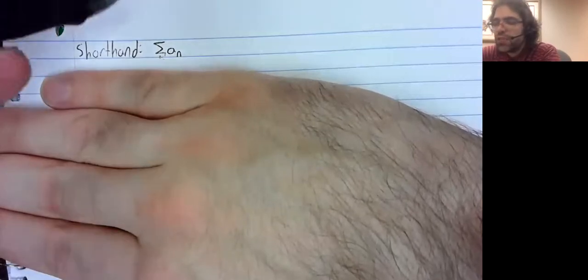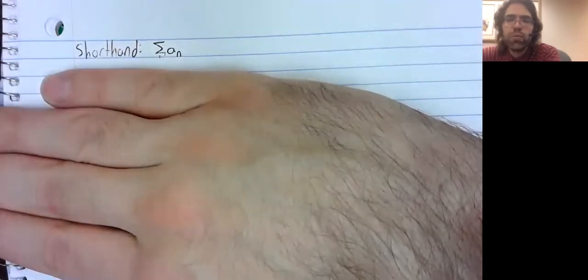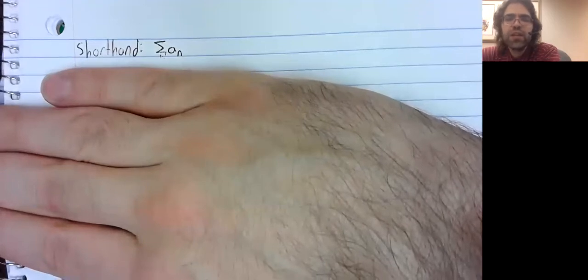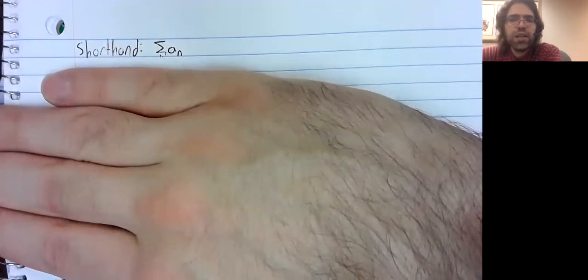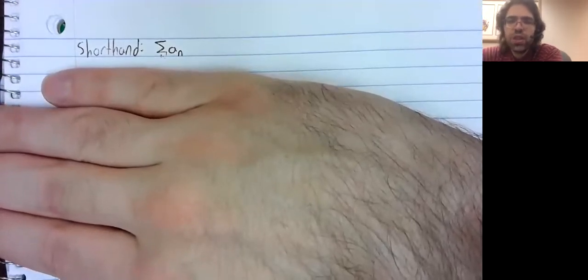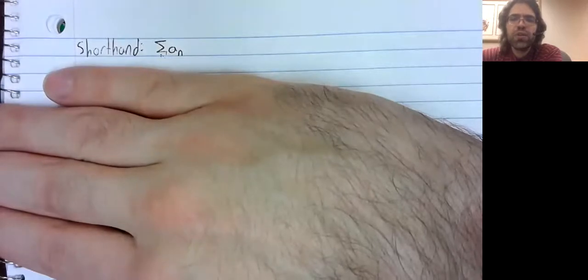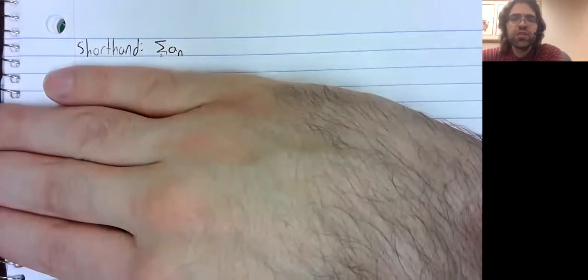And whether it starts at n equals 0, or n equals 1, or n equals 20, is really neither here nor there. So if you just see the sigma notation, nothing below, nothing above, that's our shorthand for an infinite sum.